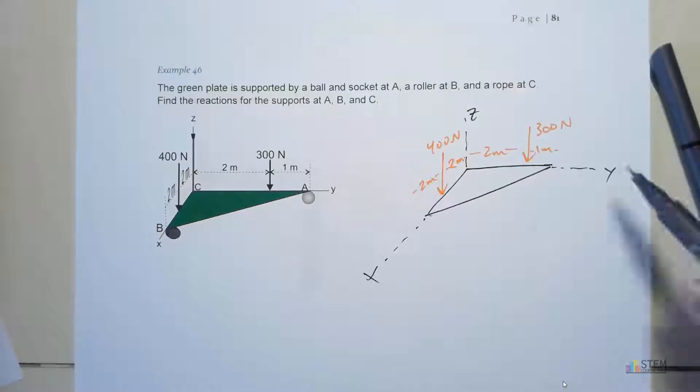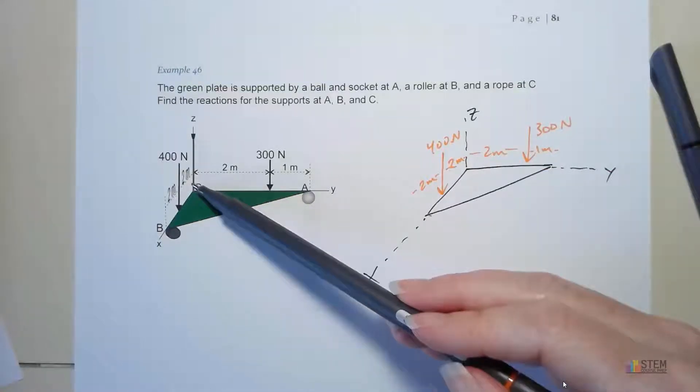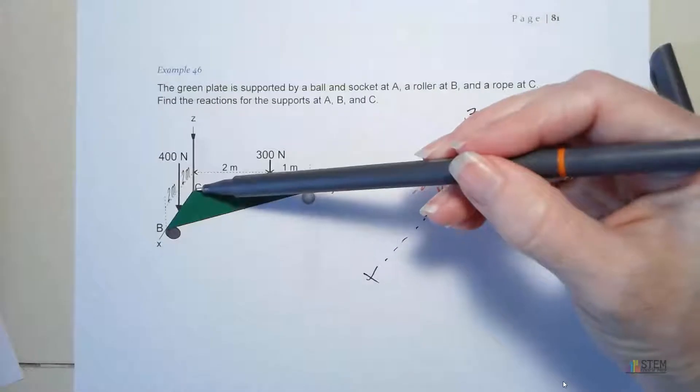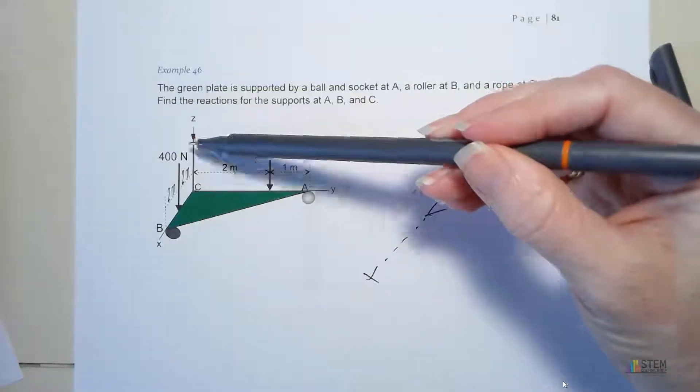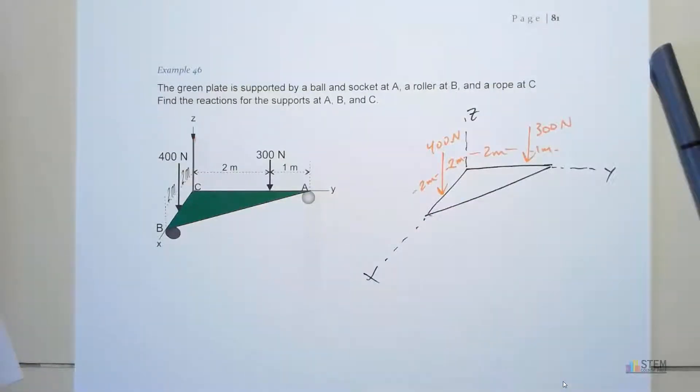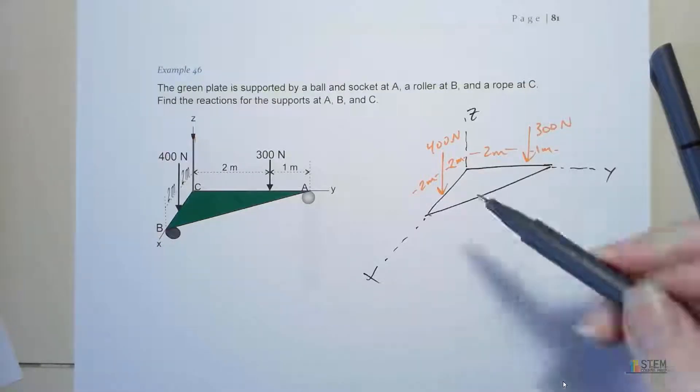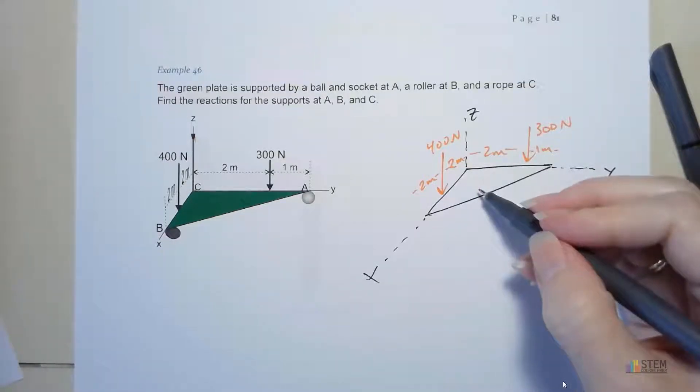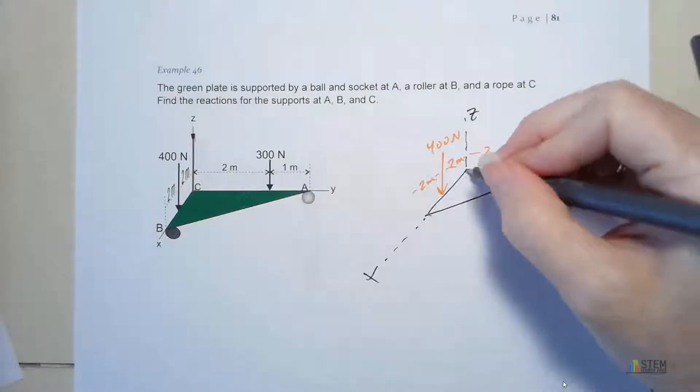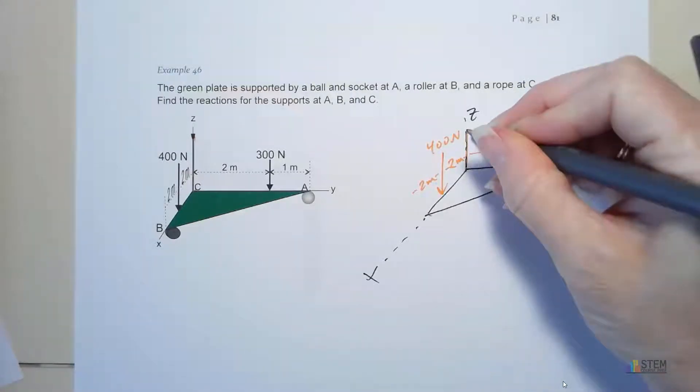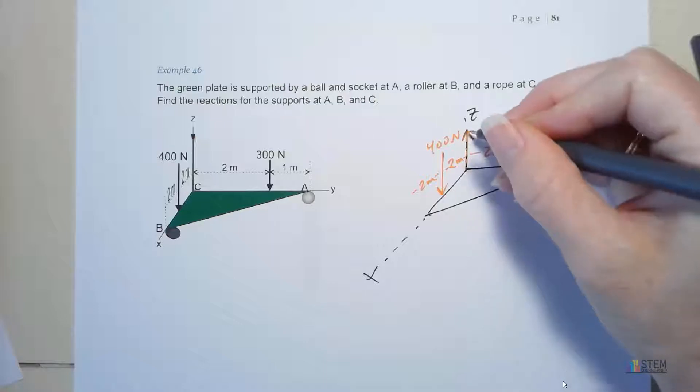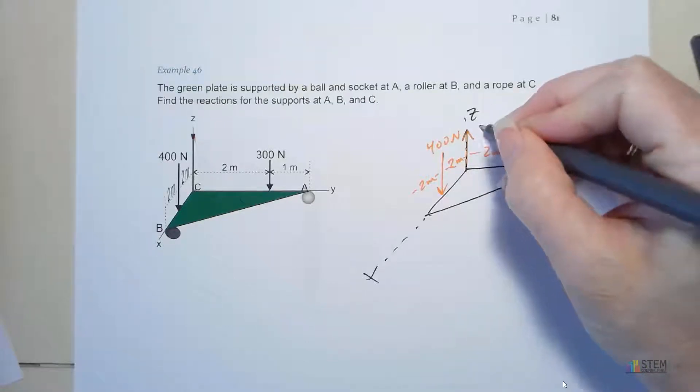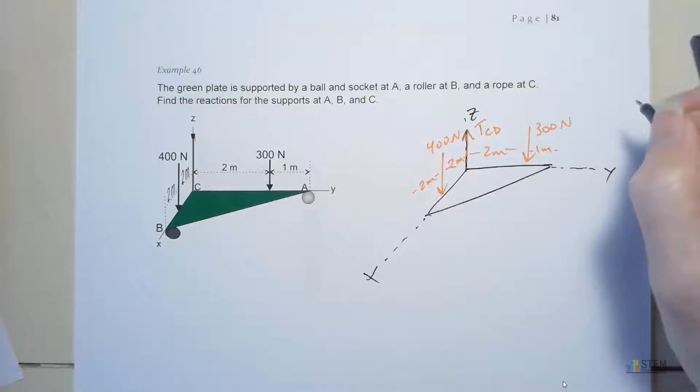Now we've got our supports. Let's start with the rope. We've got this rope attached between C and this point up here. Which way would the rope act? Do we want the rope pushing on this plate? No, because a rope can't push. It's not going to provide any support. We want it to pull, provide tension. So it's going to act away. I'm going to call that TCD.